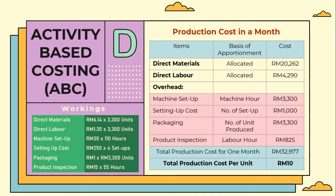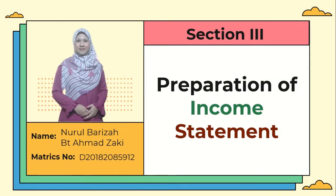We now move on to activity-based costing, which is very useful for pricing decisions and identifying cost activities. This is the working based on the basis of apportionment that we decided before. After adding up all the costs, the total production cost for one month is 32,977 ringgit. Therefore, our total production cost per unit will be 10 ringgit, as we produce 3,300 units in a month.